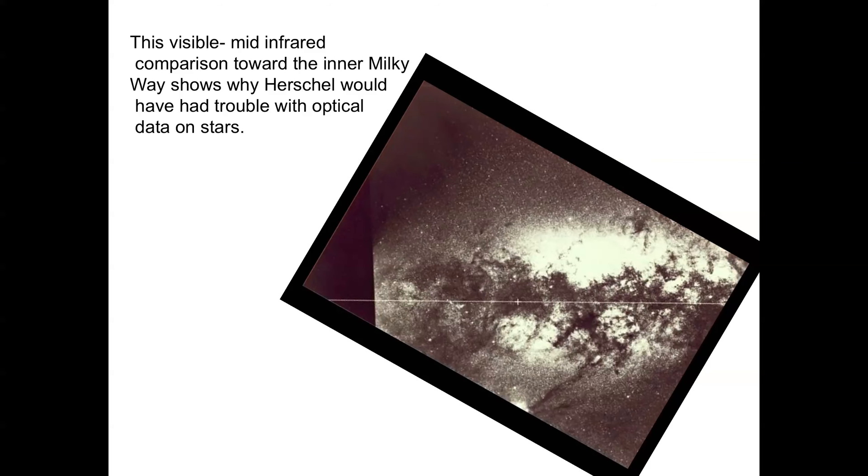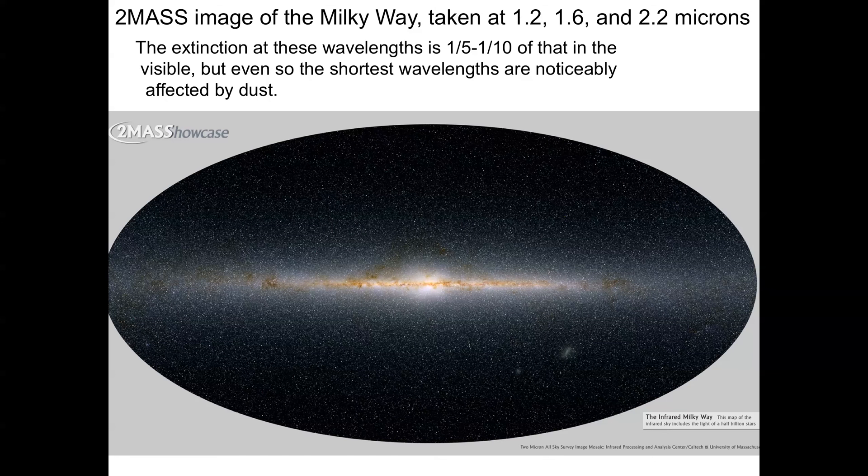If you look at wavelengths where you can penetrate through the dust, as in this image made with the two-mass project, the ground-based project run by NASA, in the near-infrared where the extinction values are between a fifth and a tenth of what we get in the visible, there's still some dust, and you see that in the form of these red spots, which are clouds. But you can see that from our perspective looking towards the inner galaxy, you see the bulge of the galaxy and very clearly outlined, you see the plane of the galaxy as well.